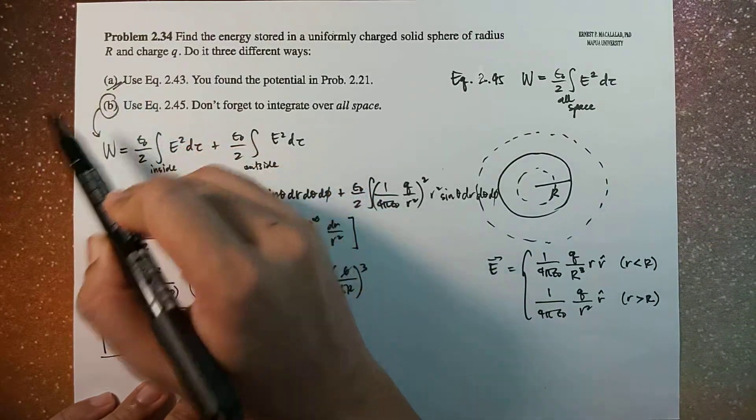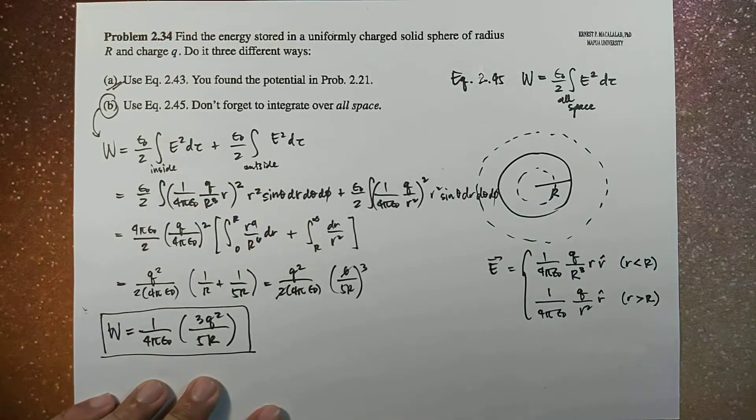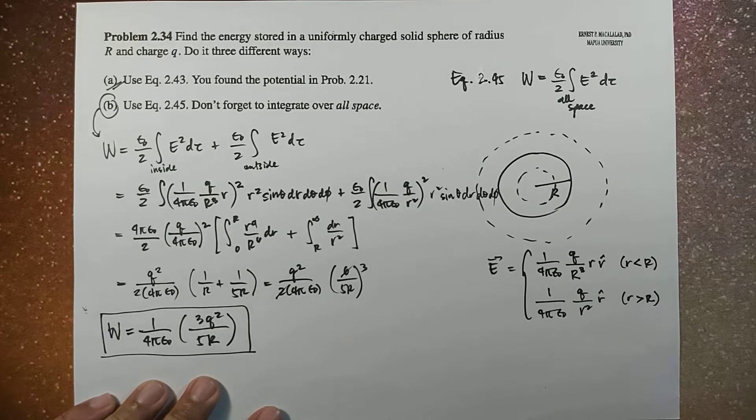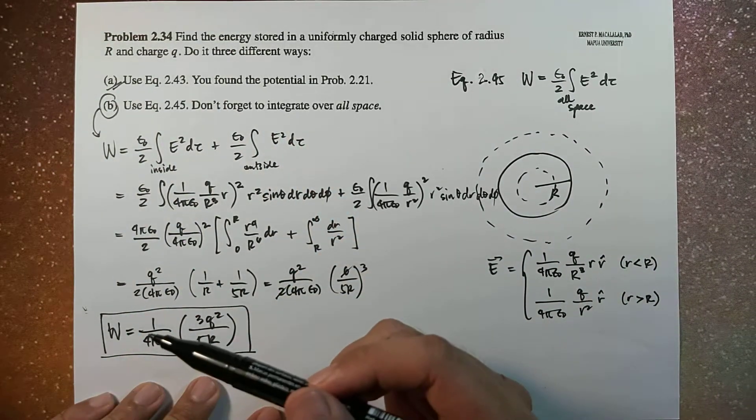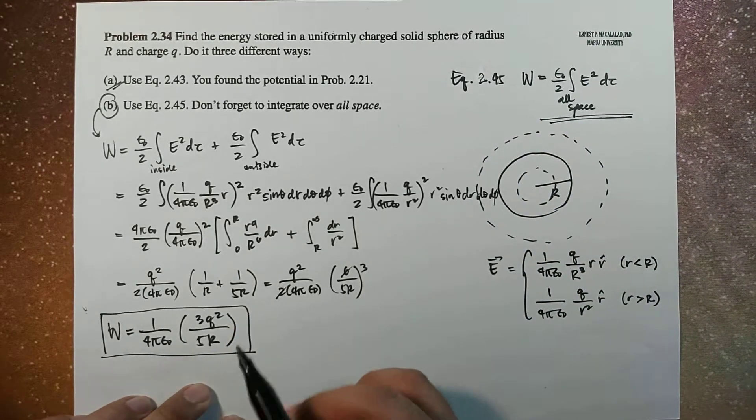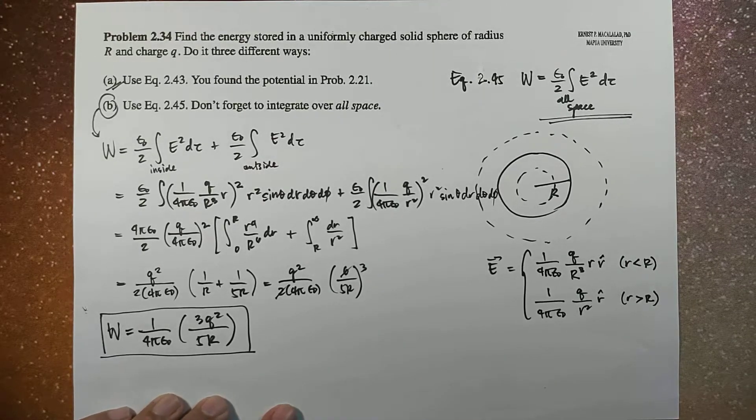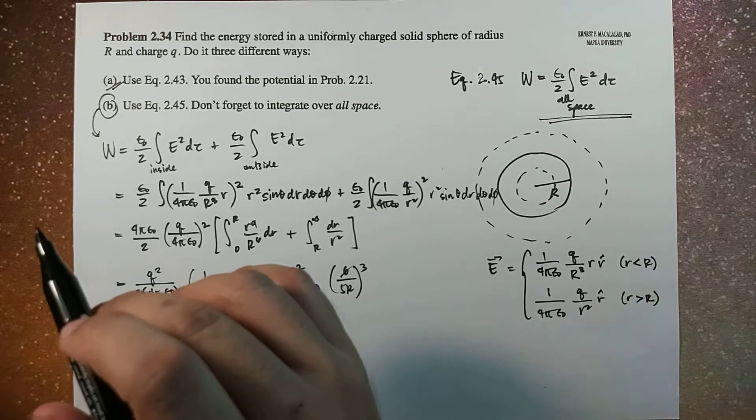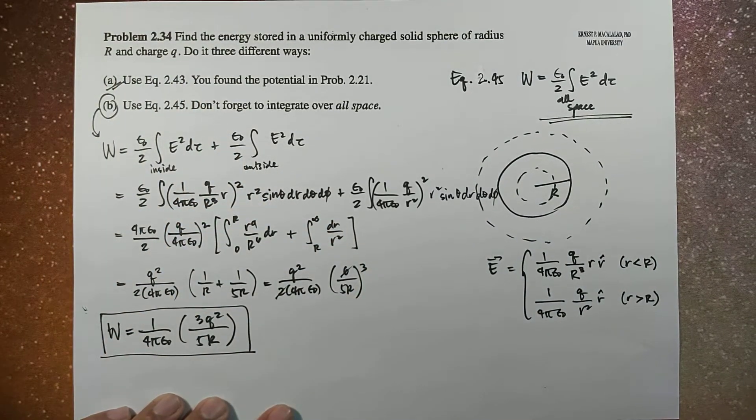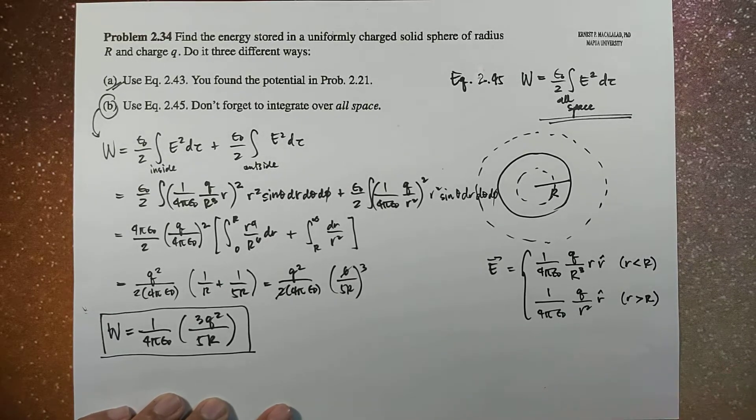So similar to what we obtained from letter A, wherein we used equation 2.43, to find the energy stored using equation 2.45, we were able to obtain the same results using a different equation. So this is the energy stored in a uniformly charged solid sphere of radius R and charge Q. So the original problem 2.34 has letter C, and I will leave it to your own exercise.